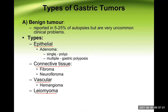Epithelial tumors are the adenomas. They may be a polyp, which is a single one, or polyposis, which is the multiple form. They are known as gastric adenoma, and adenoma means they are benign. Connective tissue tumors may be fibroma or neurofibroma, both benign. Vascular tumors are angiomas, which can occur anywhere there are blood vessels. And leiomyoma can also be found, since the stomach has a smooth muscle coat.